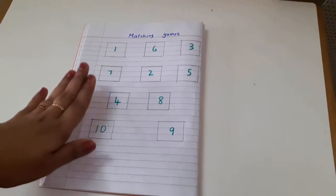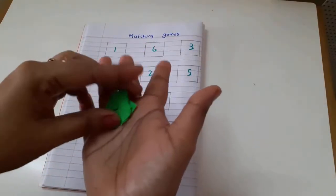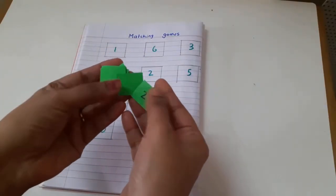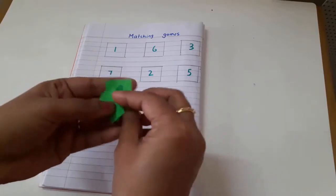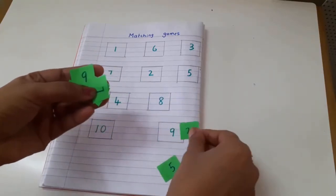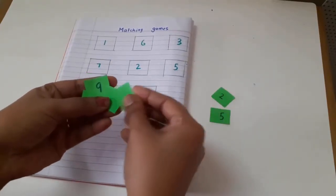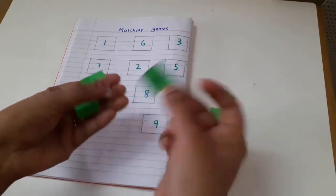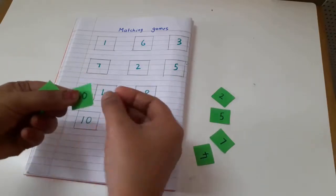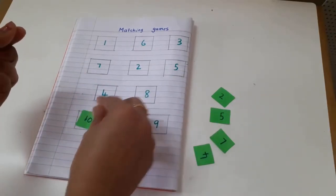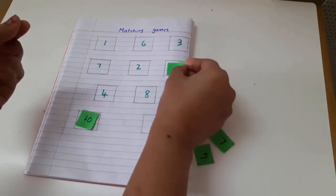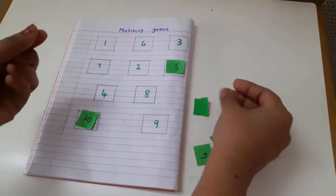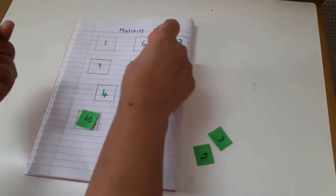Now what you have to do is take paper cutouts like this where I have written the same numbers from 1 to 10, and they simply have to match these paper cutout numbers with the boxes.